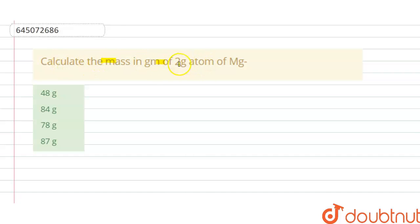Calculate the mass in gram of 2 gram atom of Mg. We have options A, B, C, D given here, so we have to choose the correct option.